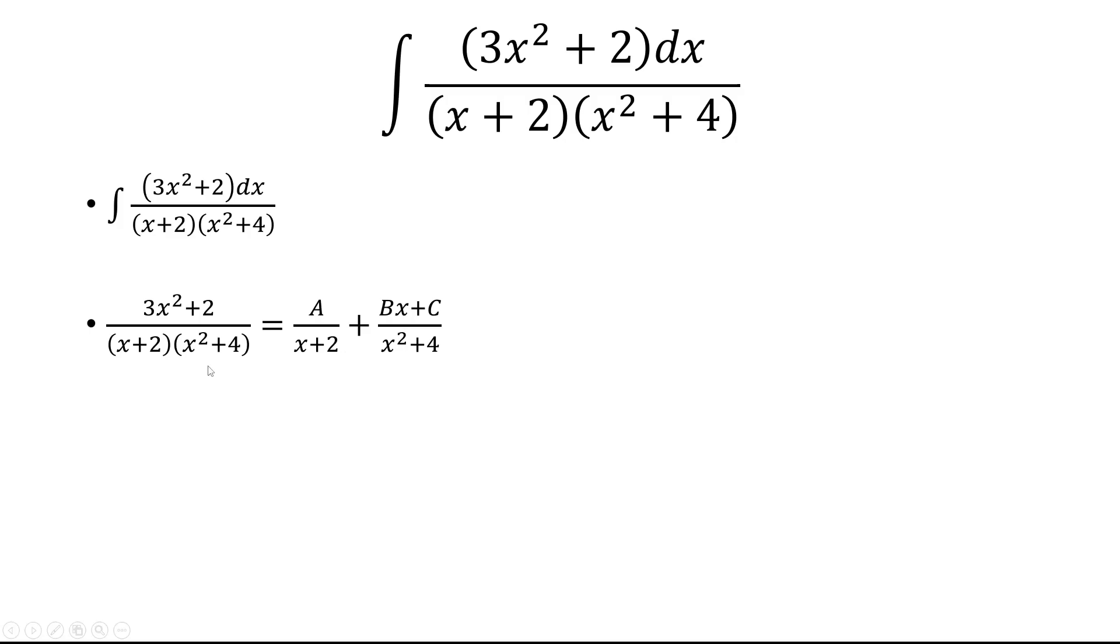Now the next step is to multiply both sides by x plus 2 times x squared plus 4. On the left side, we're left with 3x squared plus 2, and then that's equal to A times x squared plus 4 plus Bx plus C times x plus 2.